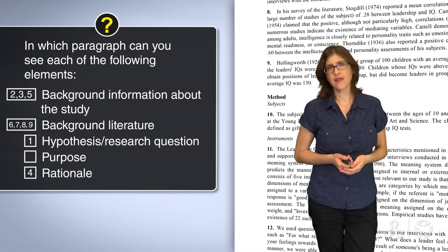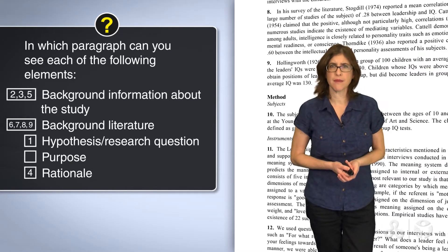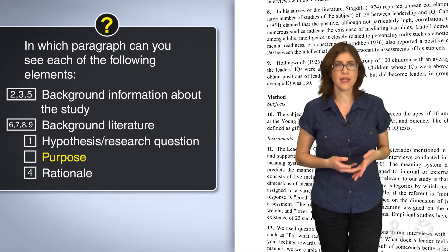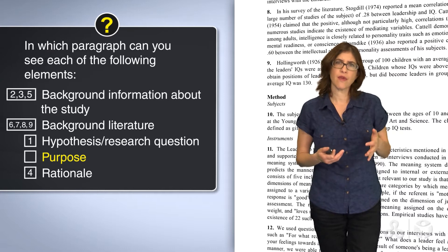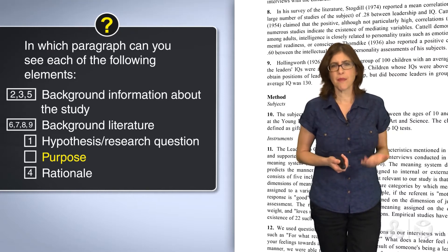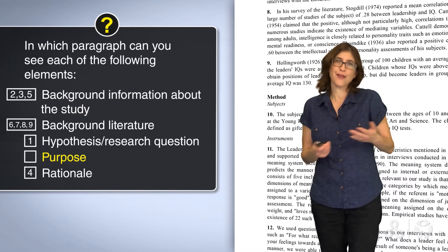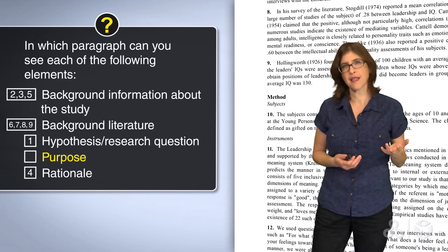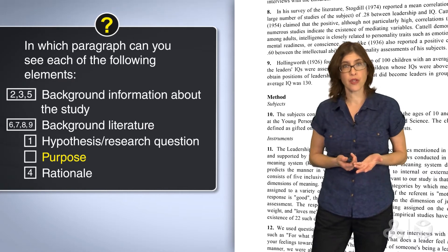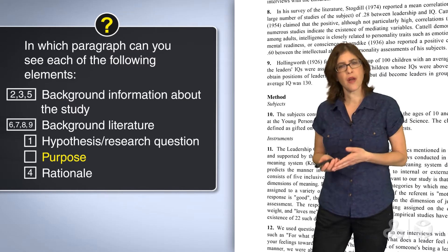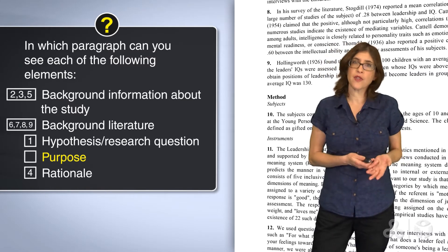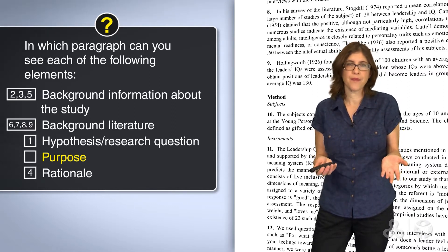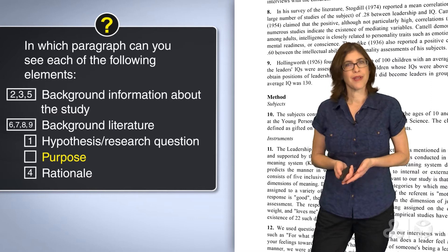It looks like we did not find the writer's purpose. Sometimes, if the writers write a clear research question or hypothesis, like in our case, they don't write a purpose — because many times the purpose is to answer the research question, and it can be inferred from the research question. On the other hand, we might find it in the first paragraph. We don't know everything from the skimming — we haven't read the text yet. So we will put a question mark here.